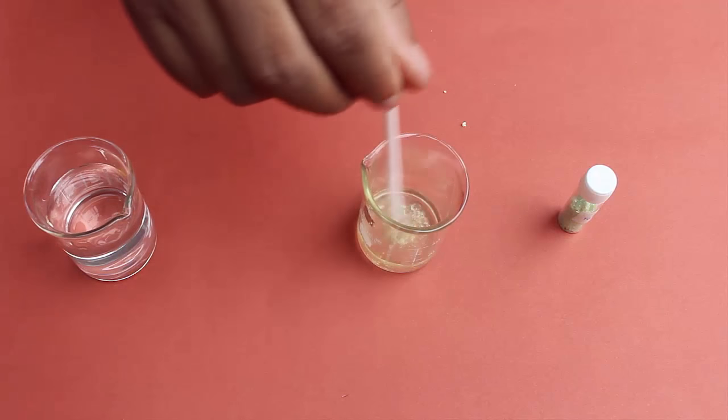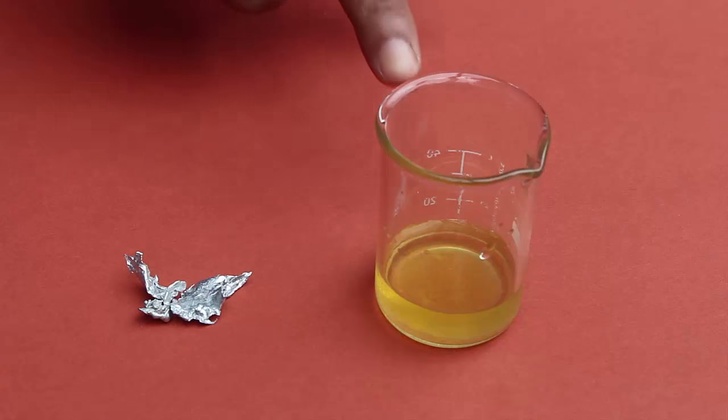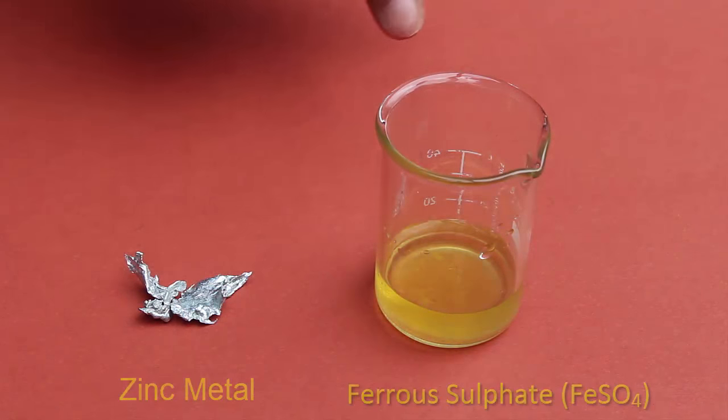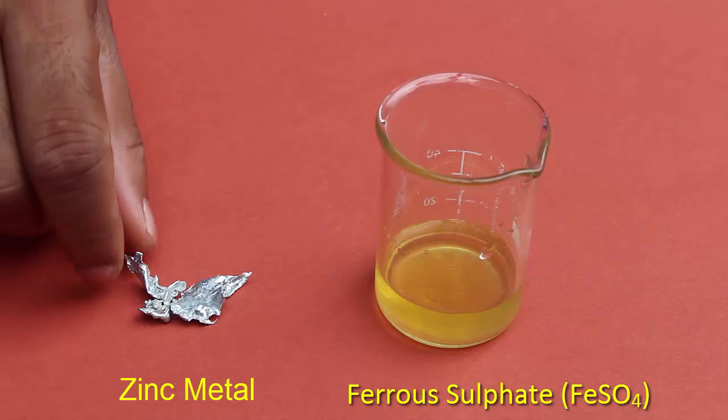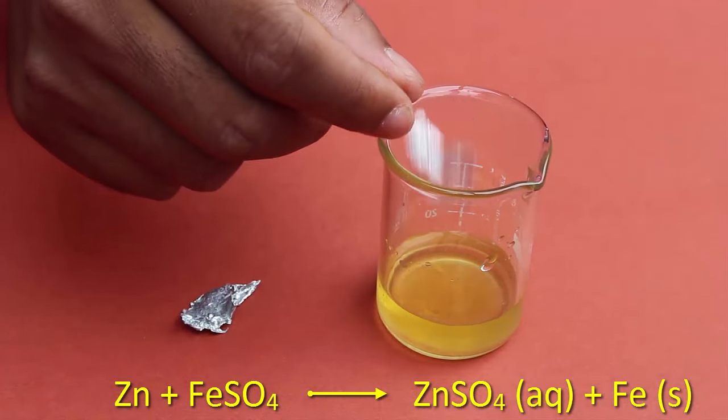So now we have this solution of ferrous sulphate which is little bit faint in color, faint green color. So in this solution we are going to add some zinc metal.